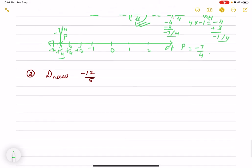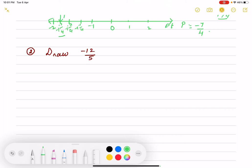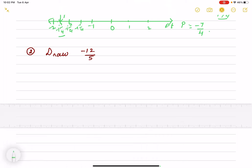Same way, for the second question, draw minus 12 by 5. First change it. It is minus 2 2/5, meaning we go to the negative side.